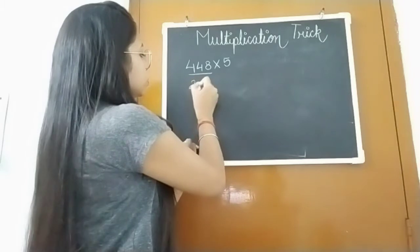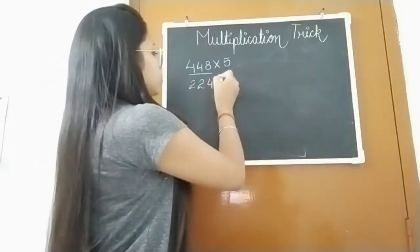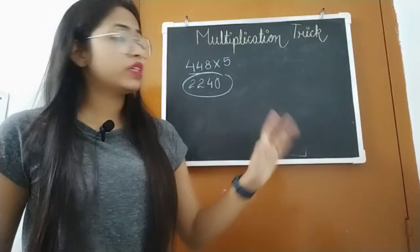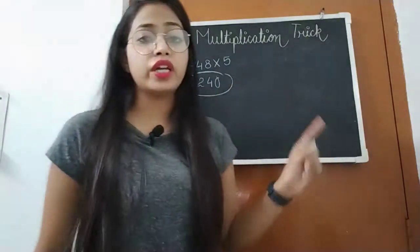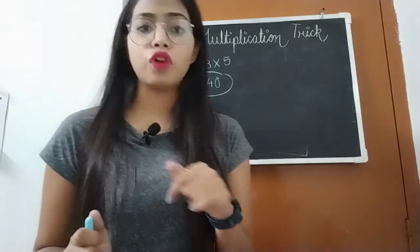2 divided by 2 is 2, 4 divided by 2 is 2, 8 divided by 2 is 4. Then we put a 0 at the end. And this is our answer. When we multiply 448 by 5, we get 2,240.